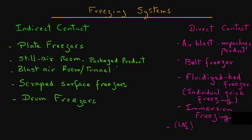In case of direct contact freezing, typical systems used are air blast systems for the unpackaged product. We have belt freezers, fluidized bed freezers, where we can accomplish individual quick freezing, or commonly called IQF. And also systems that involve either immersion freezing, such as in a brine, or use of some type of a cryogen that changes phase and extracts heat from the product, such as liquid nitrogen or solid carbon dioxide.